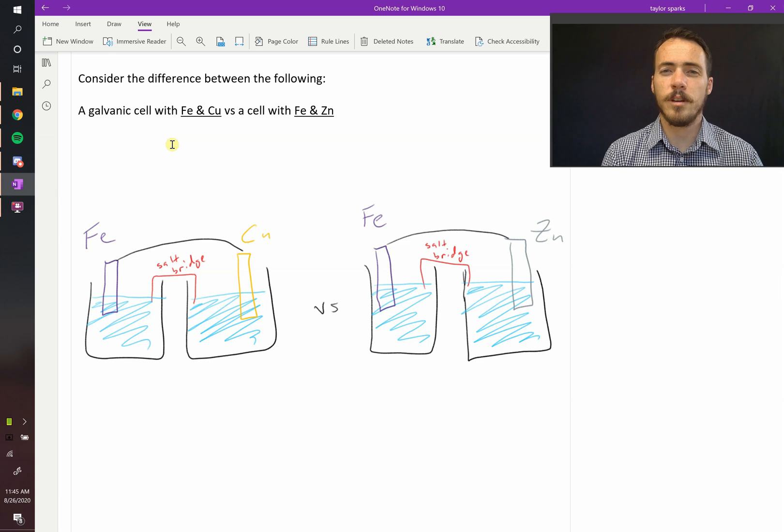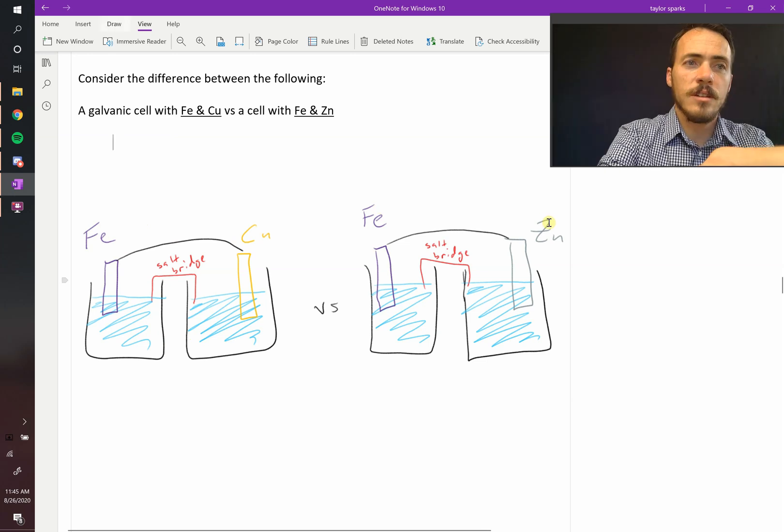Okay, we've talked about the basics of electrochemistry, but it gets a little bit trickier. For example, imagine these two scenarios. You've got a galvanic cell - galvanic cell just means that the metals are connected electrically, and you've got a salt bridge, and you've got solutions in these. So in one case you've got iron and copper, but in the second scenario you've got iron and zinc.